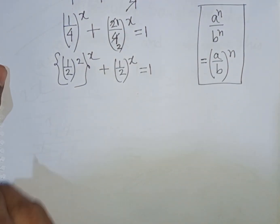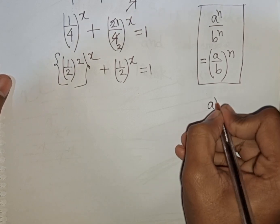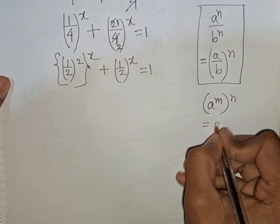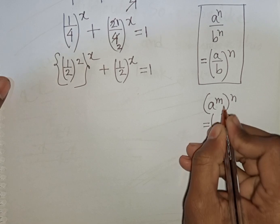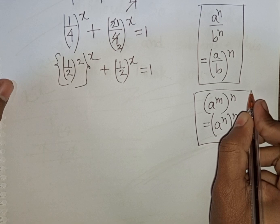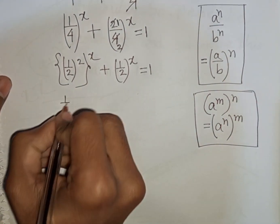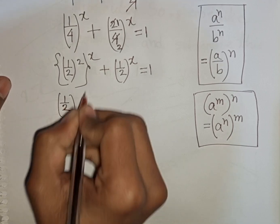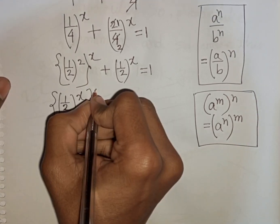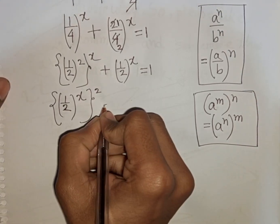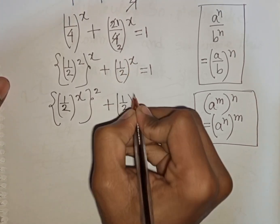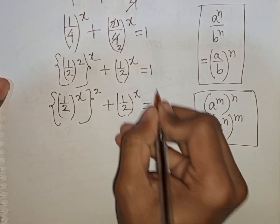Here we apply the exponential rule that (a power m) bracket power n is equal to a power (n bracket power m). So according to this rule, (1 over 2) bracket power x, second bracket power 2, plus (1 over 2) bracket power x is equal to 1.